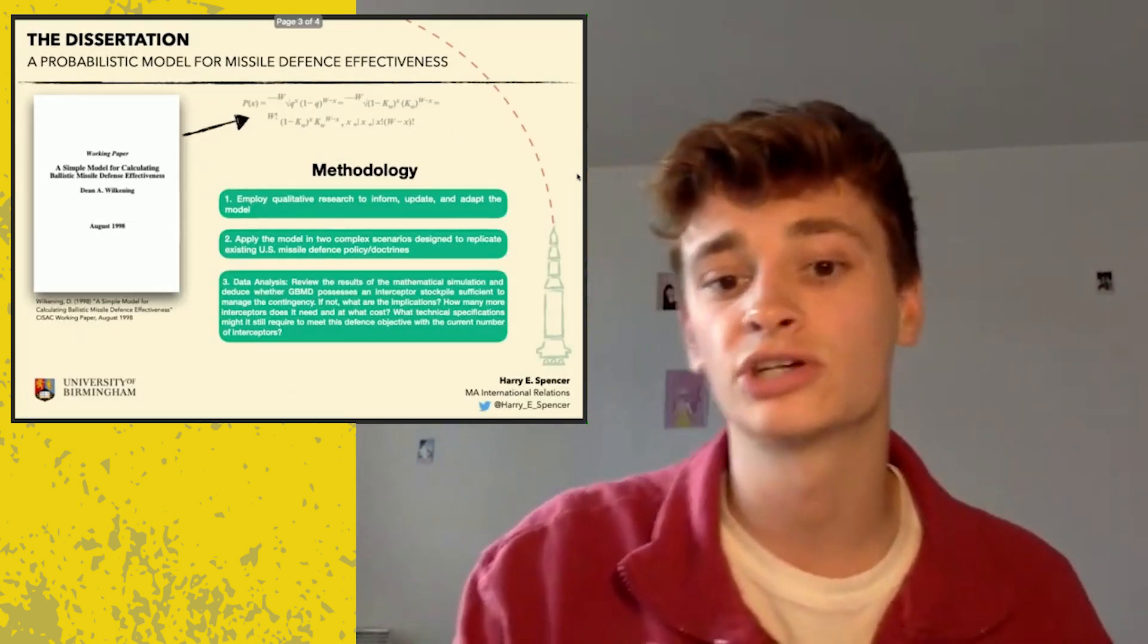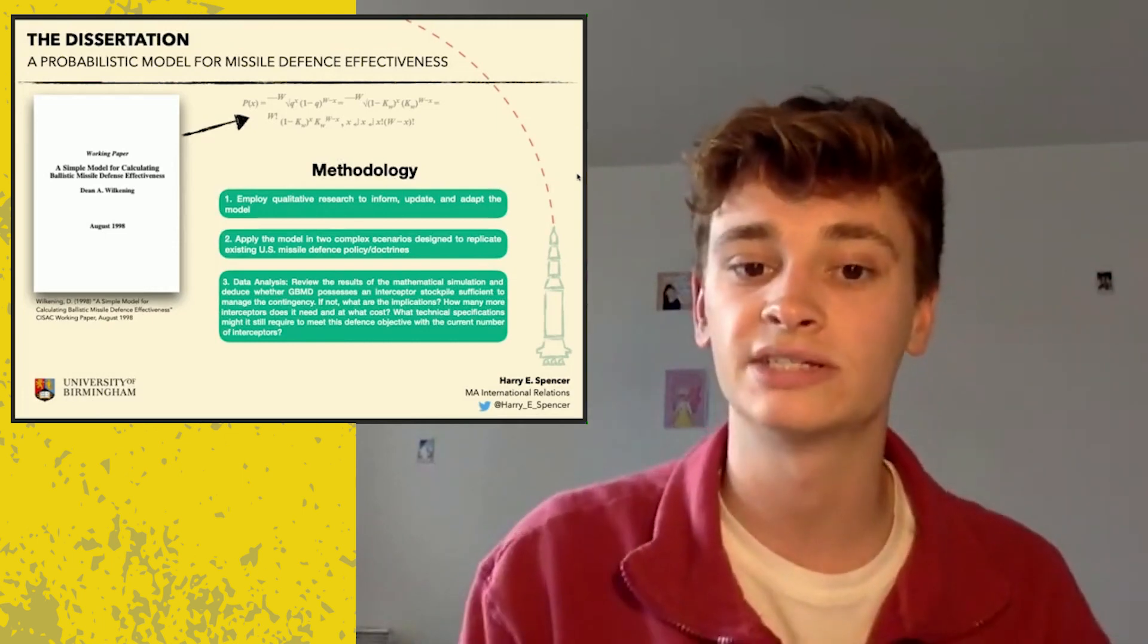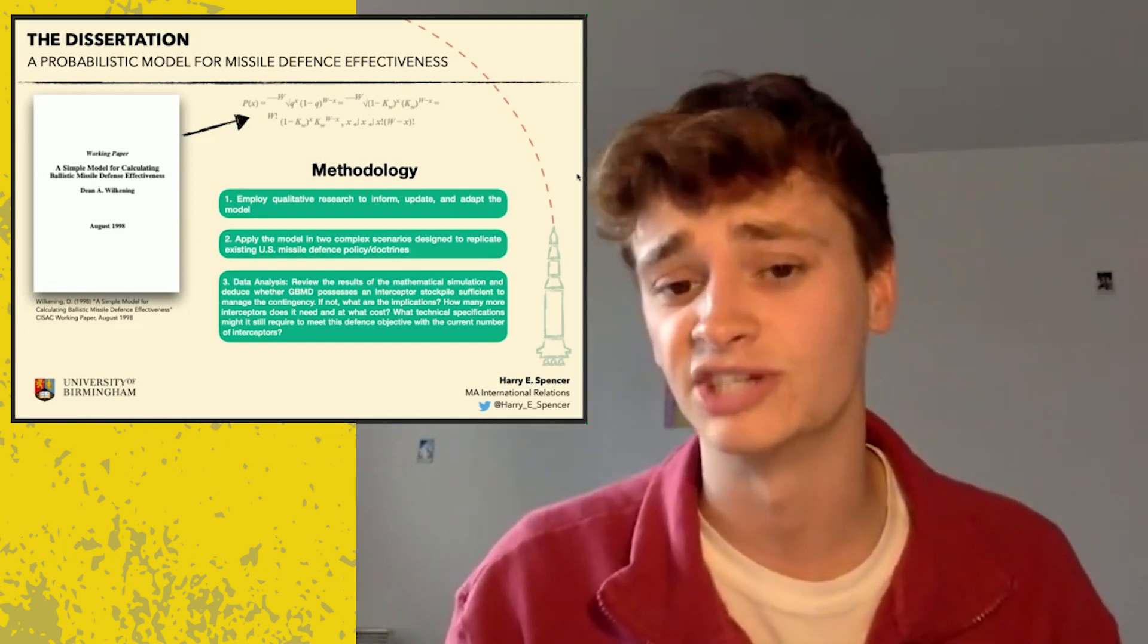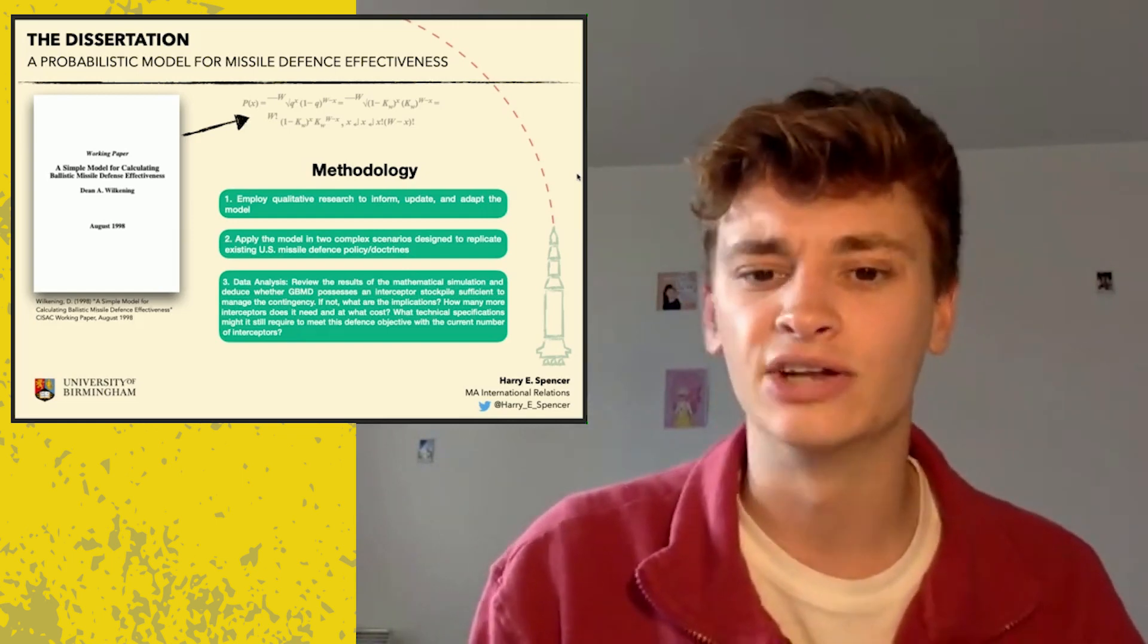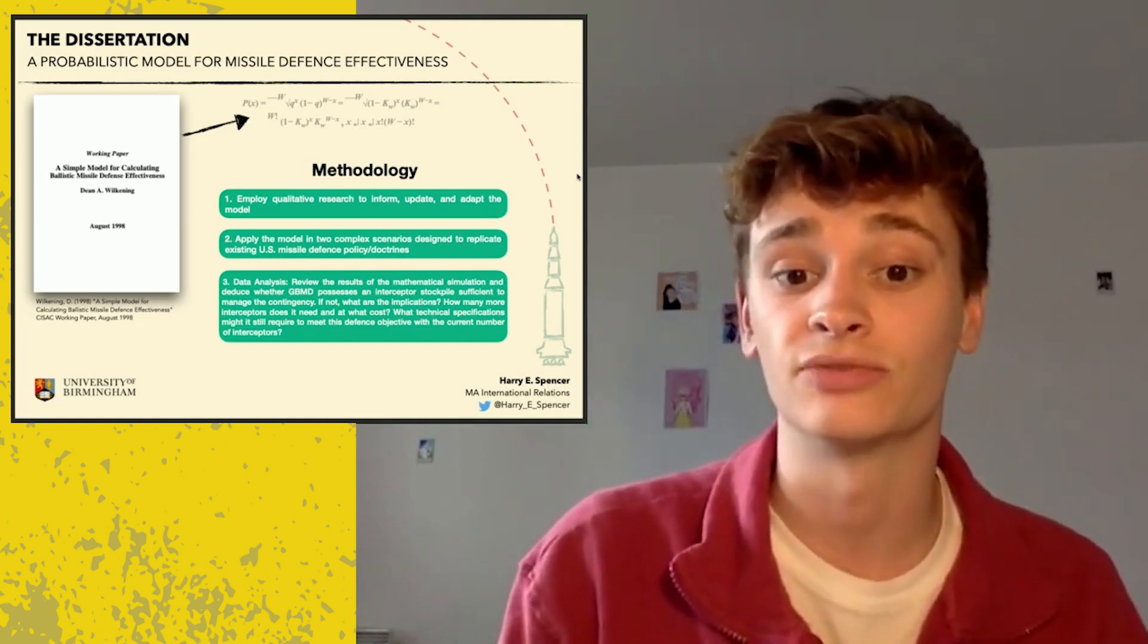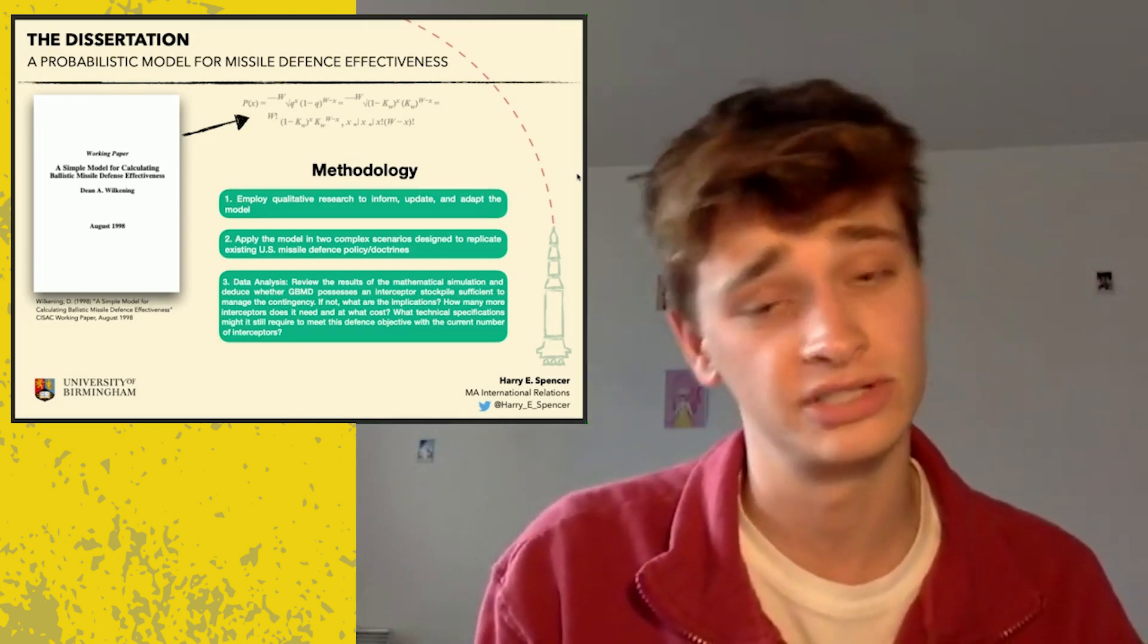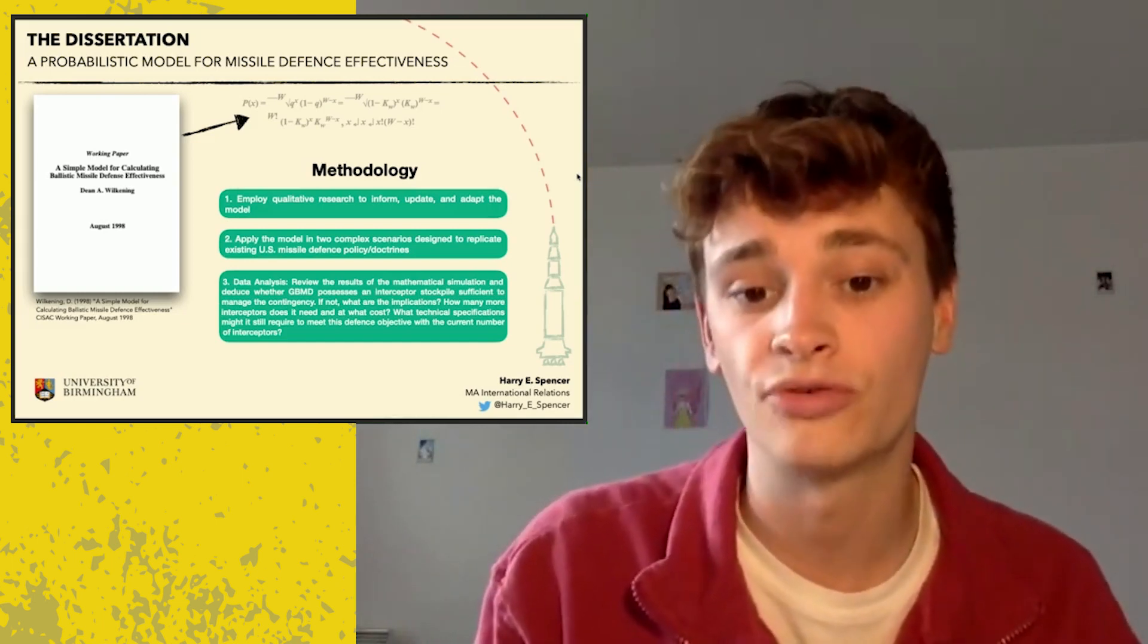To address these problems, my research proposes a quantitative solution, where I use applied mathematics to model this system in two distinctive scenarios. These scenarios replicate missile defense policy, and they place the system in the situations where the missile defense agencies say it's designed to work. The model itself is drawn from a paper in the literature, and it's really cool because it gives me the versatility to control the variables and adjust them based on the scenario. We know that by 2028, the total number of interceptors the GBMD will have is 64. So if the model tells me I need more than 64 interceptors, I will be able to say how and to what extent that system will fail in the future.